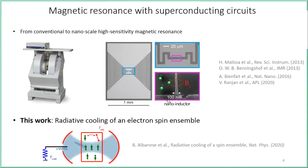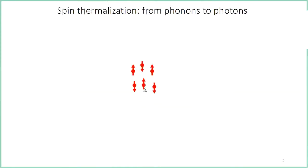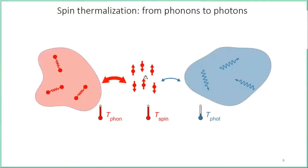Today I will present a new research line where the idea is to use the superconducting resonator coupled to spins to realize radiative cooling of an electron spin ensemble. We consider a very dilute electron spin ensemble where interactions between spins are negligible, so the temperature of the spin ensemble is set by the interaction of the ensemble with two different baths: the phonons in the crystal hosting the spins and the photons in the electromagnetic environment.